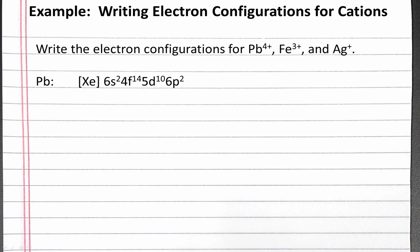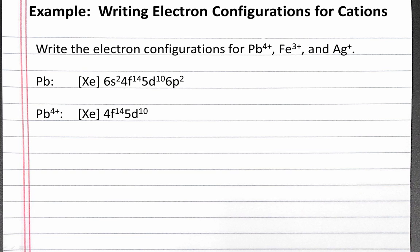Now we have our electron configuration for Lead, and we need to adjust it for Lead-4+. When we create the electron configuration for a cation from the neutral atom, we remove electrons according to the charge from the highest principal quantum number. The highest principal quantum number with electrons is n equals 6. So we first remove the two electrons from the 6p subshell, then we remove the electrons from the 6s subshell. Notice that we do not remove electrons from the 5d — we have to remove them from the 6s. So what's left is our electron configuration for Lead-4+: xenon, 4f14, 5d10.